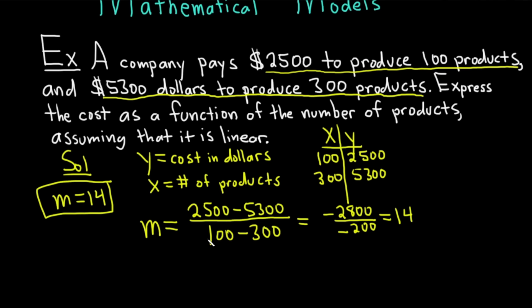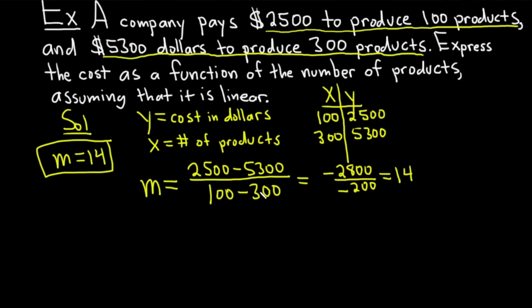So now we have a couple ways to finish. We can use the point slope formula or we can use the slope intercept formula. Let's use the formula y equals mx plus b. That's the slope intercept formula. And we have some information. We have m. So we can plug that in. So y equals 14x plus b. So now we just have to find b.